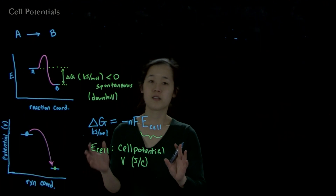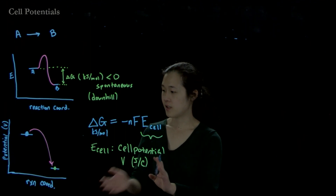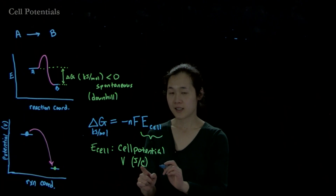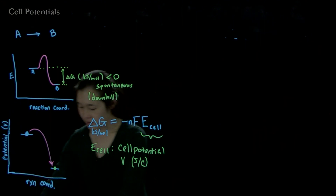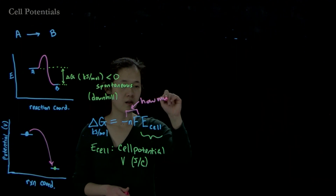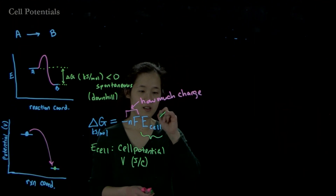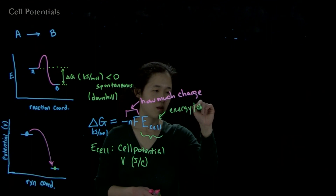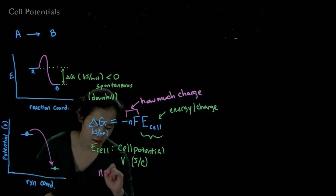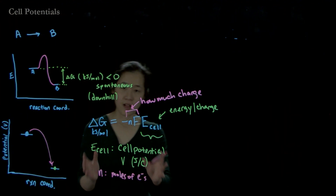The cell potential is different for every cell and every chemical reaction under certain conditions. To convert to energy units, we need to know how many coulombs of charge are being passed — that's where the negative nF comes in. N is the number of moles of electrons being passed, and this comes from our balanced electrochemical reaction.